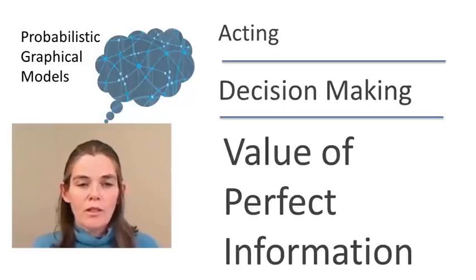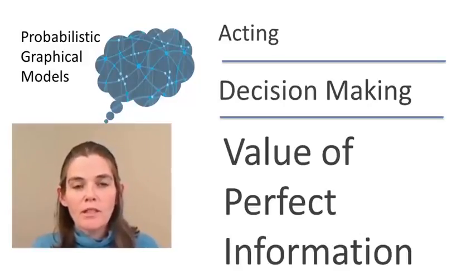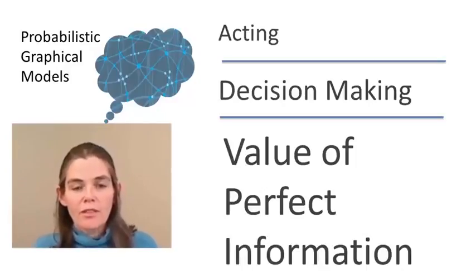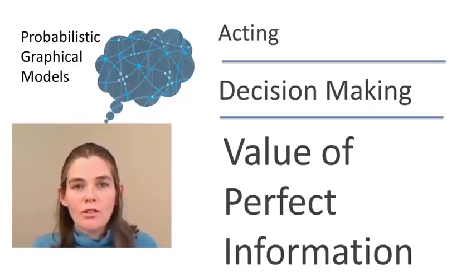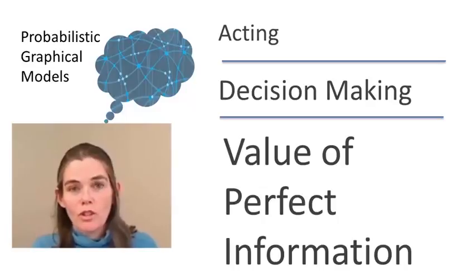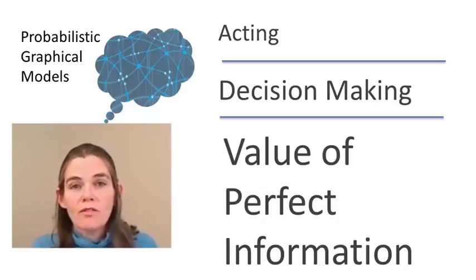We showed how influence diagrams can allow an agent to make decisions regarding what course of action the agent should take given a set of observations. But often we want to answer a different type of question, which is: what observations should I even make before making the decision?